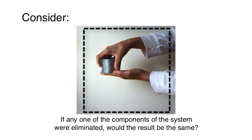We can ask ourselves, if any one of the components of the system were eliminated, would the results be the same? And if the answer is no, then you know that it's all elements functioning together that create behavior of the system.